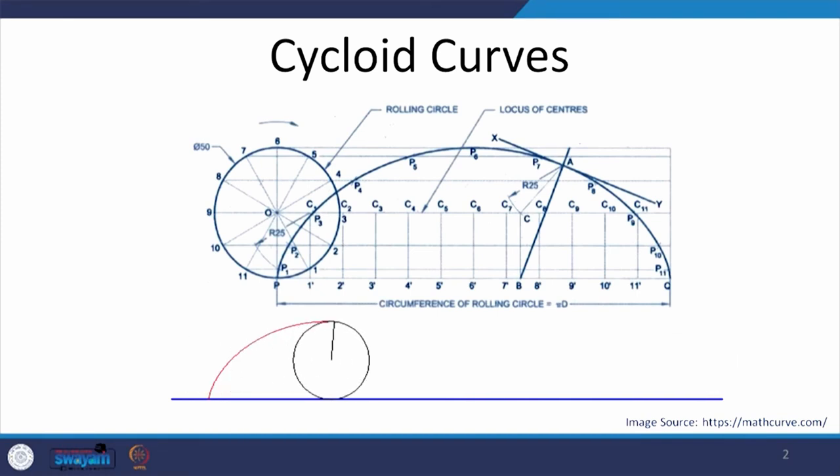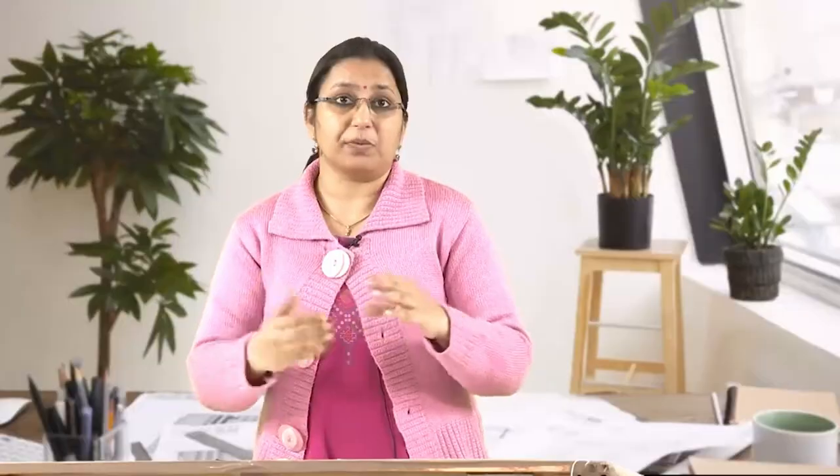It is a periodic curve. It repeats. Most of the cycloids — they could be epicycloid, hypocycloid, trochoids — they are repetitive in nature. I don't know if you have ever come across this very beautiful tool; it is very simple to use, where you get these two different circles and they move on each other. These are other forms of cycloids, epicycloids or hypocycloids.